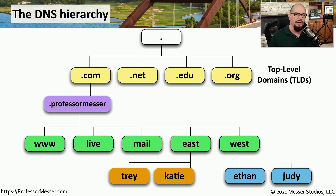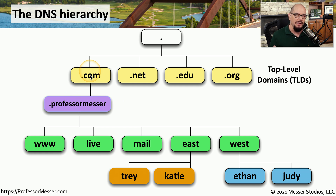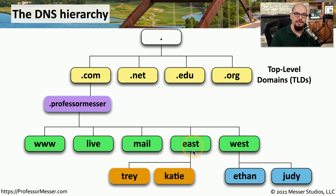Here's an example of how this hierarchy works with DNS. We start at the very top, and we may have a .com address, a .net, a .edu, or others. In my example, I have professormesser.com. So we start with the .com, and the hierarchy just under .com has the Professor Messer. I could also have other servers beyond that — a web server at www.professormesser.com, mail.professormesser.com, and even internally an east and a west. Within the east and west, I can have other servers, creating a hierarchy that tells me exactly what servers are associated with a particular area.